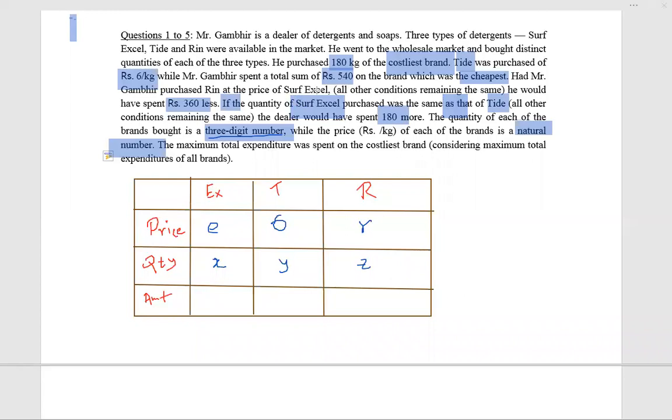That means the price of Surf Excel is more than Tide. So another information we are having: Rin at the price of Surf Excel saves 360. That means Rin is costlier than Surf Excel. Rin is costlier than Surf Excel, and Surf Excel is costlier than Tide. So the cheapest one is Surf Excel, and the amount spent here is 540.